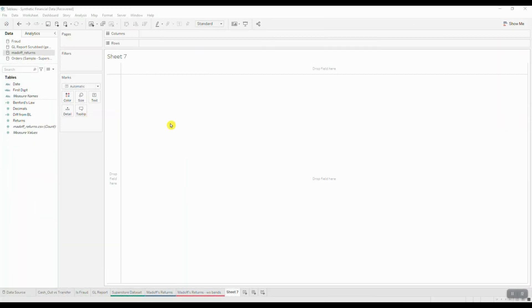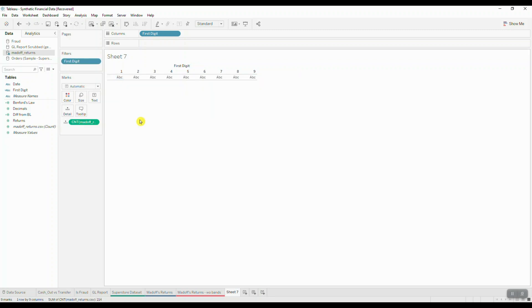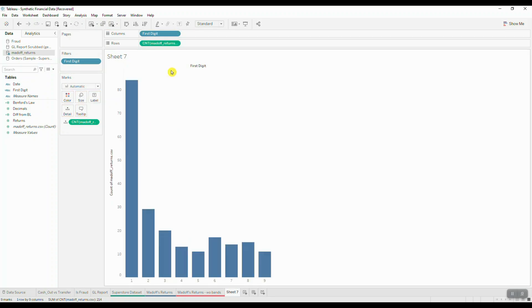All right, so the first thing we're going to do is bring in our first digit calculation and drop it on columns. We're going to exclude zeros and bring in the total number of records for our data set. We're going to drag this in and place it into rows. We're going to change this to a table calculation that will give us the frequencies as a percentage of the total number of returns. We're going to click on the number of records, select quick table calculation, and then choose percent of total.